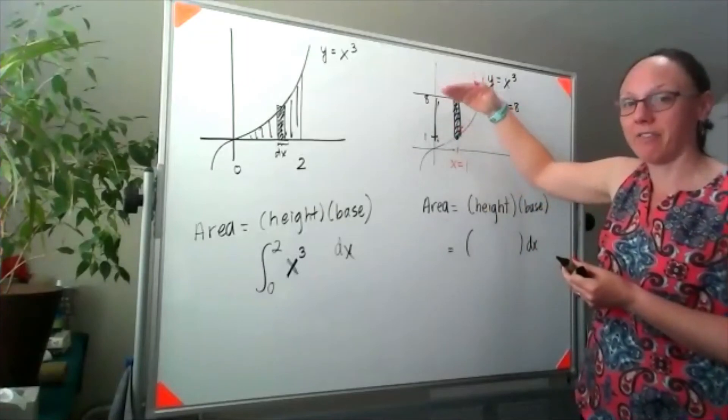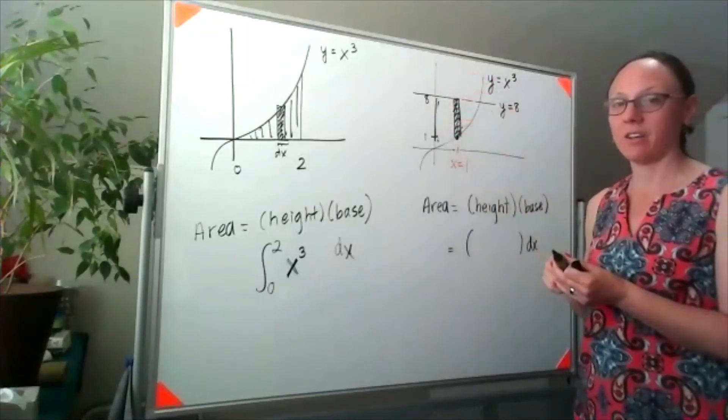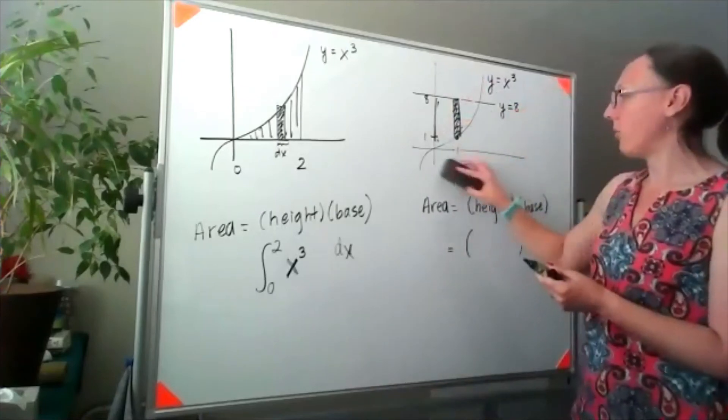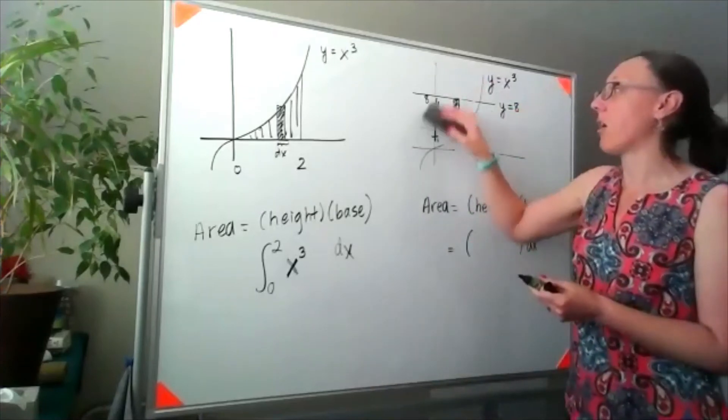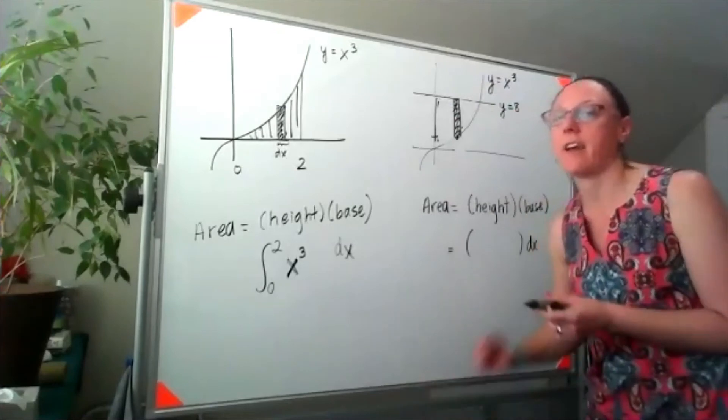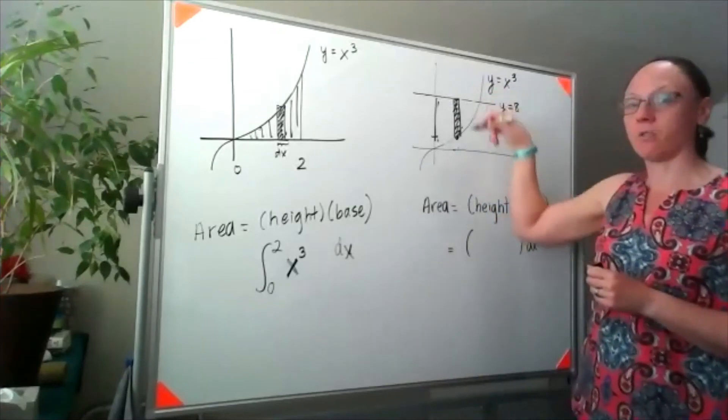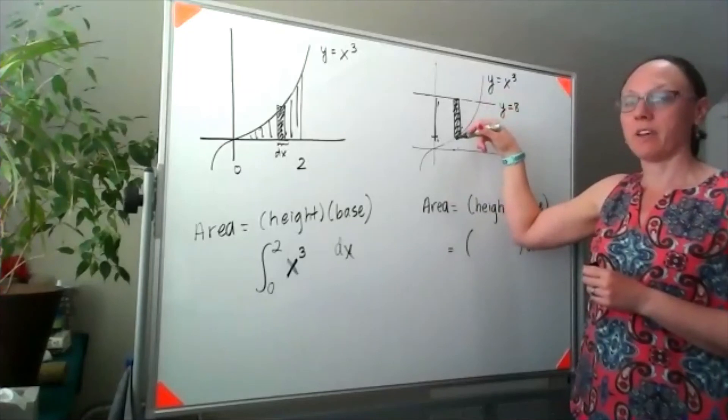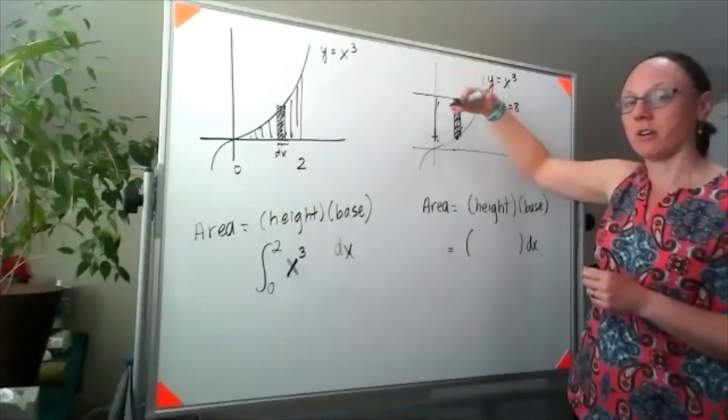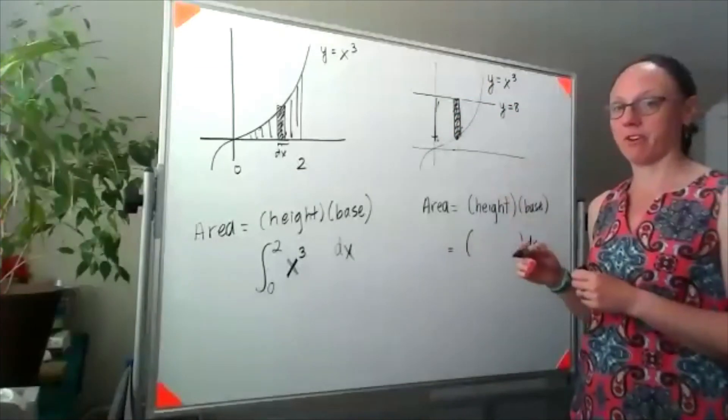Generically, I don't know what x value our arbitrary cross section is at, but I do know that I can find the height of the rectangle the same way, by thinking about what's the height of the top function minus the height of the bottom function.